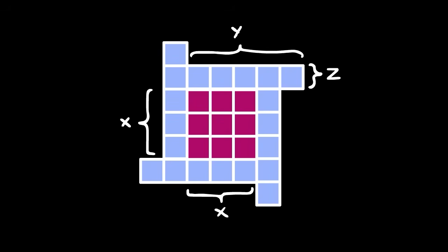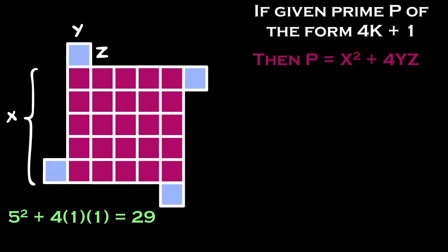We can then arrange the square and rectangles into a nice windmill shape, which we'll use later for some nice geometric intuition. Note that x is the side length of the central square, y is the length of the rectangles, and z is the height.